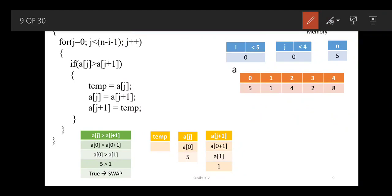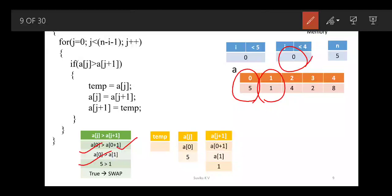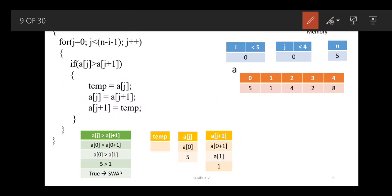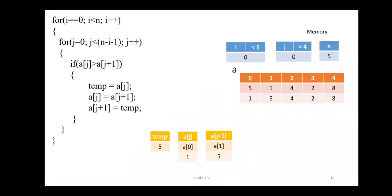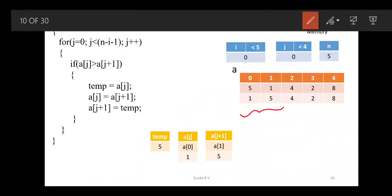Now A of j: j is 0, so j plus 1 is 1. A of 0 has value 5 and A of 1 has value 1. Is 5 greater than 1? Yes, true. So you swap these two elements by entering the if block. temp = A[j] stores 5; then A[j] = A[j+1] gives 1; then A[j+1] = temp gives 5. You can see it has been swapped: 1 and 5.